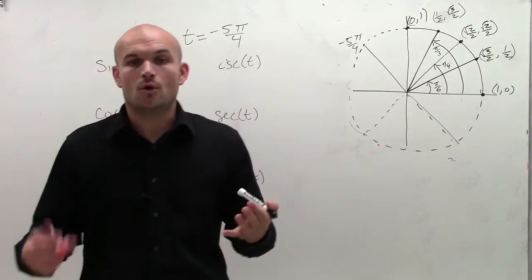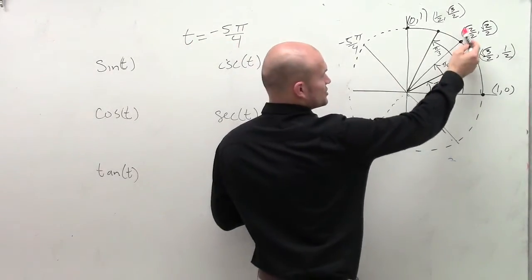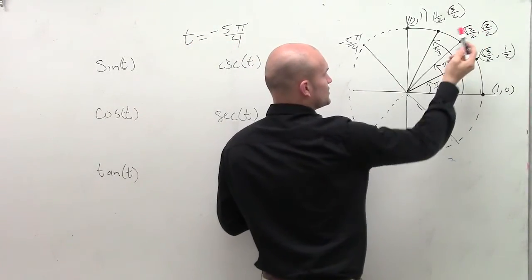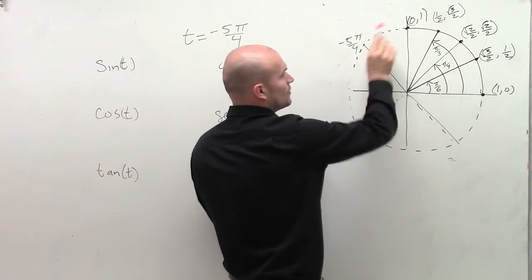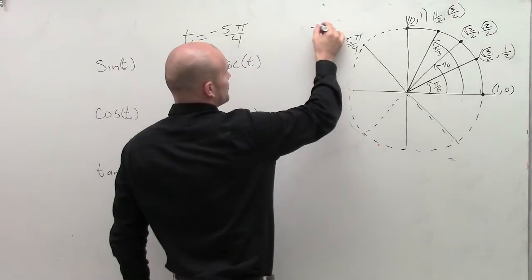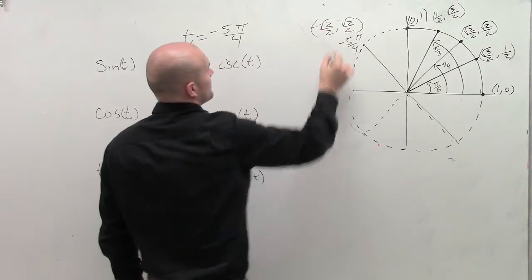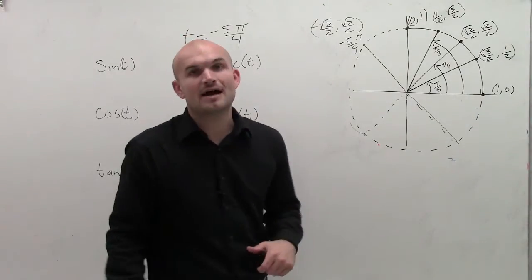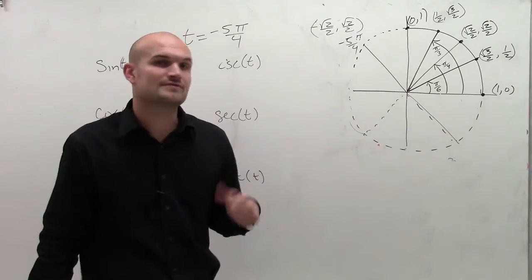Now the next thing we need to do is determine what are the coordinate points for this. Well, at pi over 4, you notice it's square root of 2 over 2, comma square root of 2 over 2. And what you notice is this is going to be an exact reflection over my y-axis. So when you reflect over the y-axis, your x-coordinate is now going to be negative. So the coordinate point at negative 5 pi over 4 is negative square root of 2 divided by 2, comma square root of 2 divided by 2.